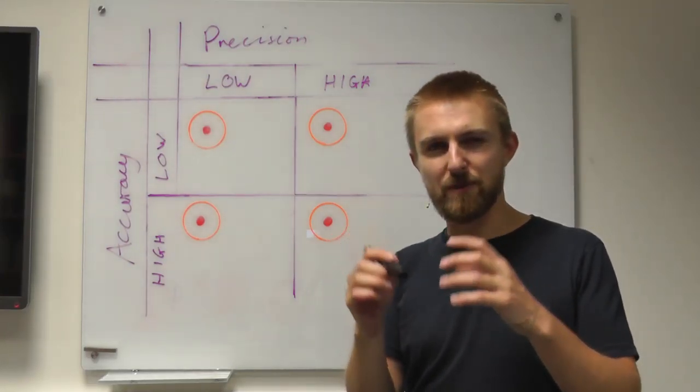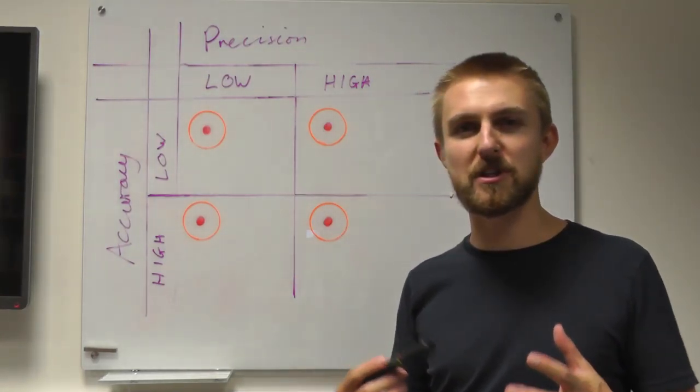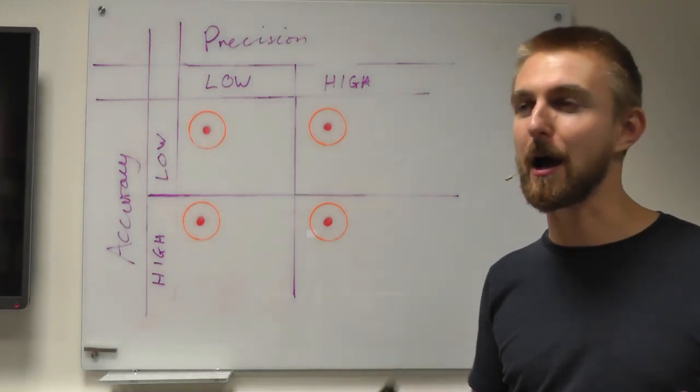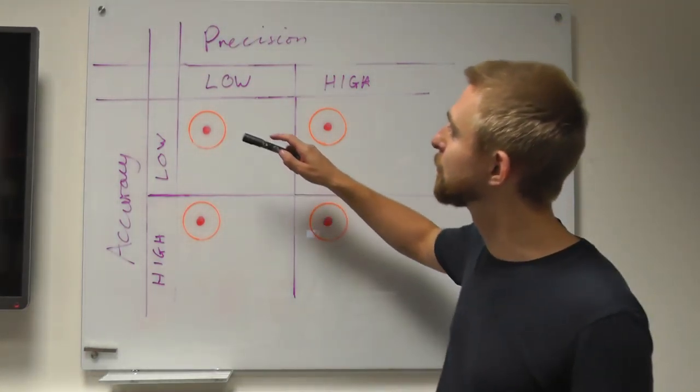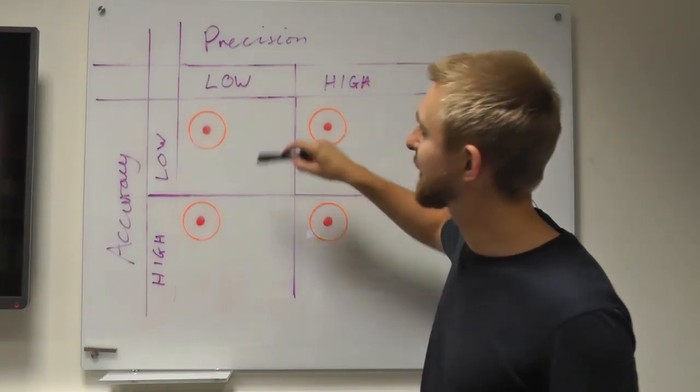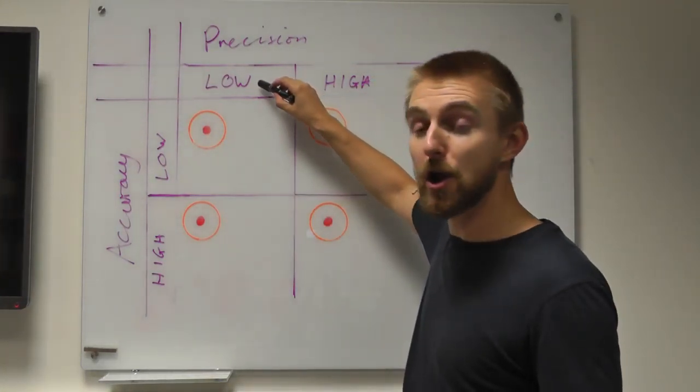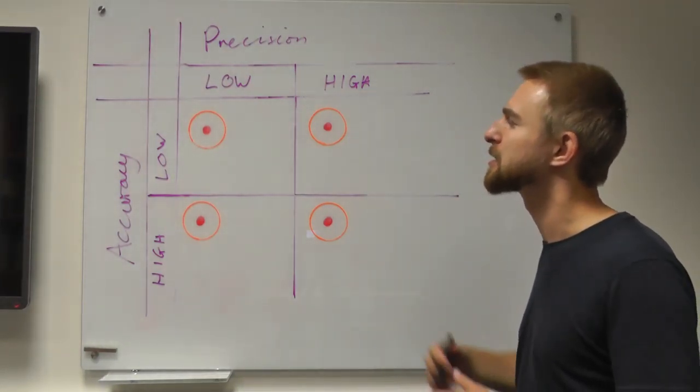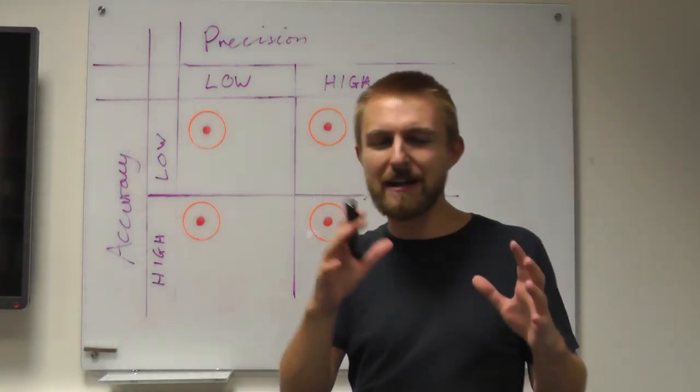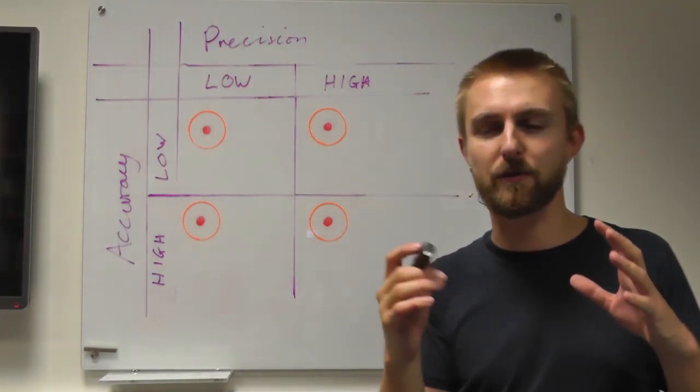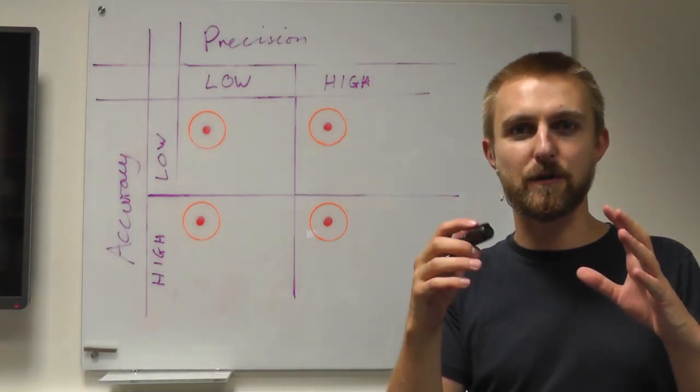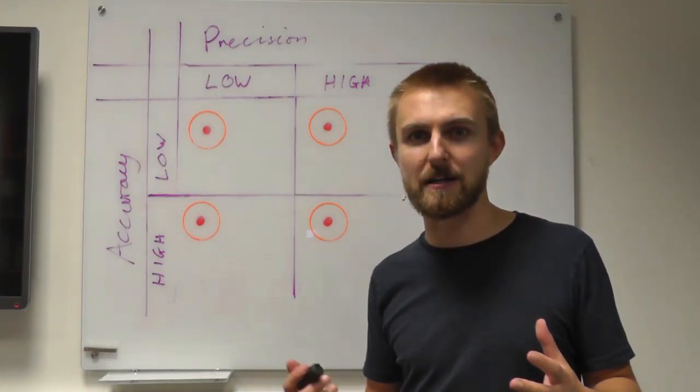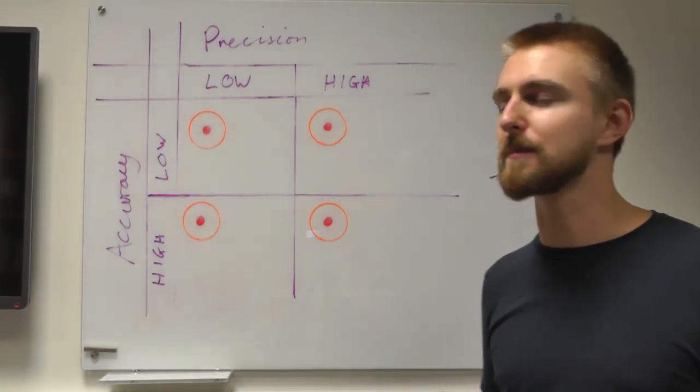And what we're going to do is represent four different types of archer, each of whom has a different ability at archery. So the one in this top left hand cell has a low precision and low accuracy style of archery. So precision is about the relative grouping of each of the shots. So if you fire a bunch of shots, if they're all nice and clustered together, that means that they are precise.